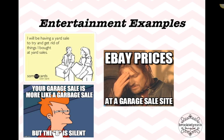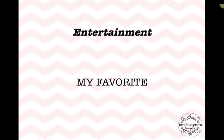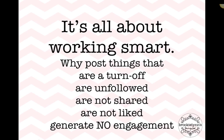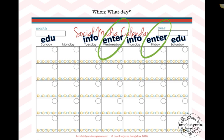E is for entertainment. It's all about working smart. Why post things that aren't followed, shared, liked, or engaged with? You want to post when it's important to your audience. Education, information, and entertainment — that's what we've covered so far. Everything that you post online needs to be E-I-E-I-O. I will do the last I tomorrow, so look for that email, and I look forward to talking to you tomorrow. Bye, guys.